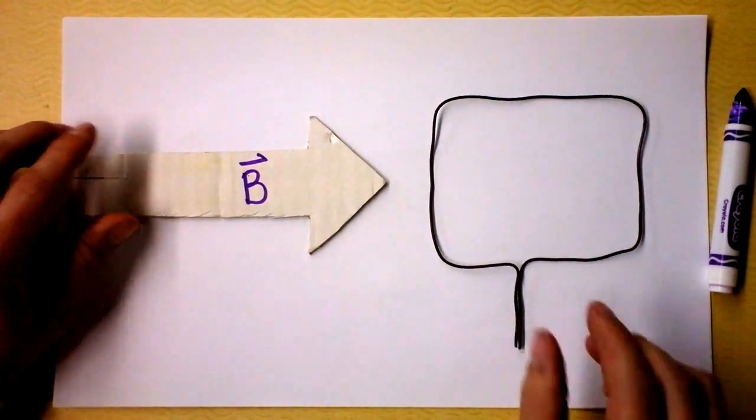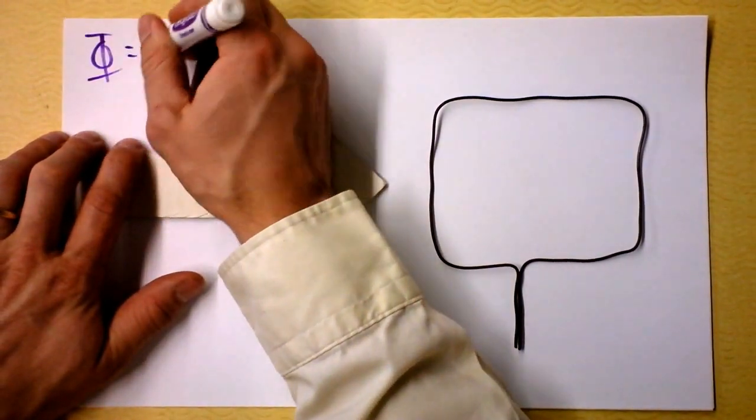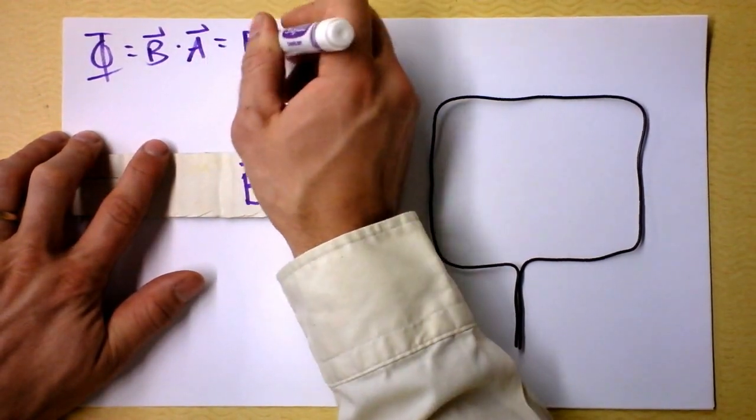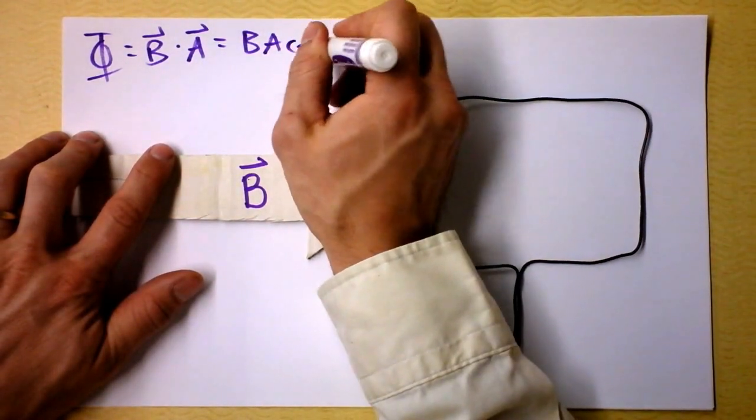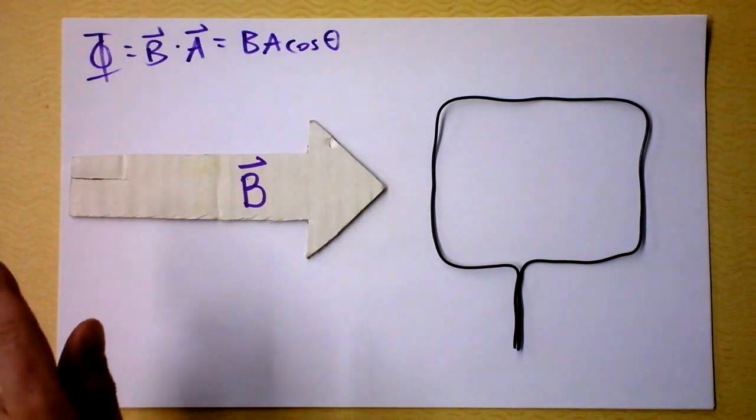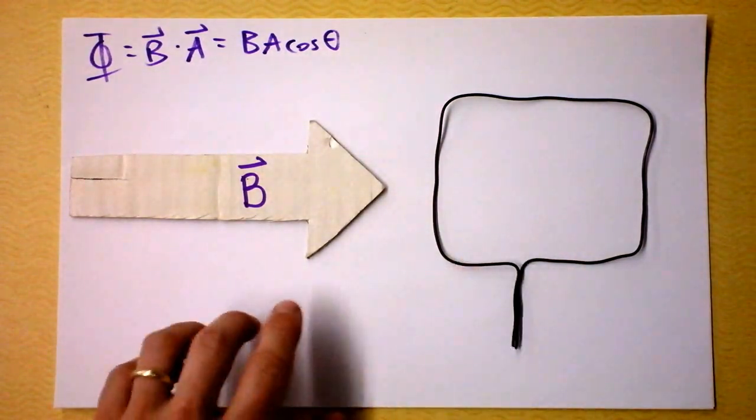So let's first agree that right now, if I'm talking about the flux through this loop, it's going to be the magnetic field dotted into the area, which is the magnetic field quantity and the area quantity times the cosine of the angle between the magnetic field and the area. Please remember that the area vector is pointing out from the area.